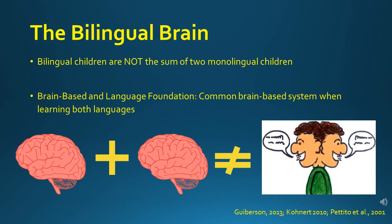Our next two slides will talk about the bilingual learner's brain. Bilingual children are not the sum of two monolingual children. Rather, research has shown that bilingual children have a common brain-based system when learning two languages — this common brain-based system is the child's language foundation, which includes the two languages they grew up with. Many studies have shown that bilingual children are in fact capable of complex tasks such as coordinating and exchanging information using two languages without getting confused.